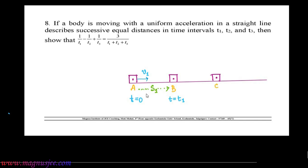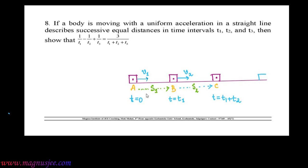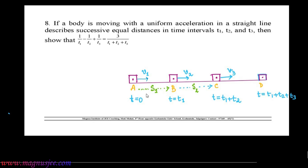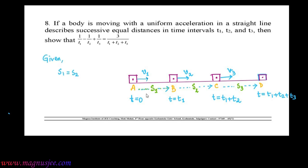After point B, the body reaches point C, traversing distance S2 from B to C with uniform speed V2. At point C, the total time is T1 + T2 seconds. Finally, the body reaches point D at time T1 + T2 + T3 seconds, moving with uniform velocity V3 and covering distance S3 in time interval T3. According to the question, S1 = S2 = S3 = S.